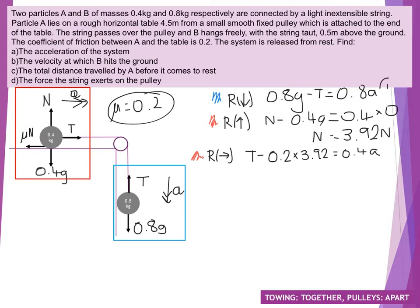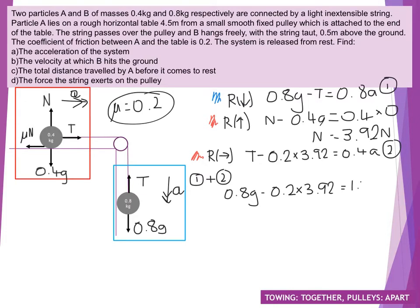So now we've got equation 1 and equation 2, both of which are equations in T and A. Doing equation 1 plus equation 2 and cancelling, we're going to have 0.8g minus 0.2 times 3.92, and that's equal to the total of our acceleration side: 1.2A. Adding together the left-hand side then dividing by 1.2 gives us our final acceleration value of 5.88 metres per second squared. So that has answered part A: what is the acceleration of the system.